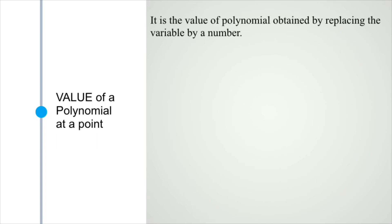When you replace the variable of a polynomial by any number and simplify, you get a number which is called the value of the polynomial at that number.